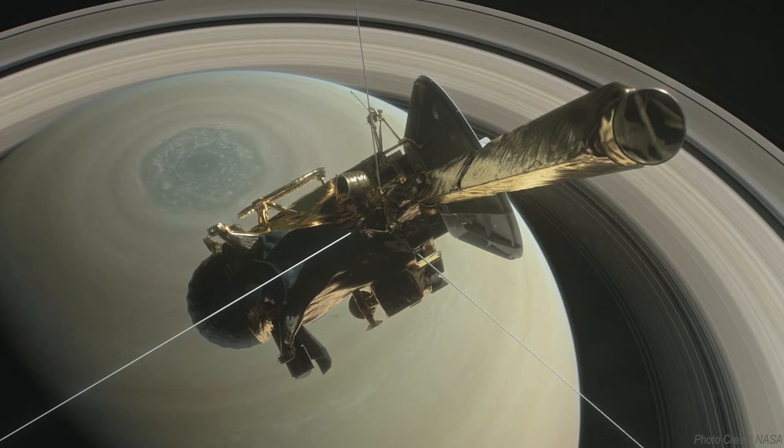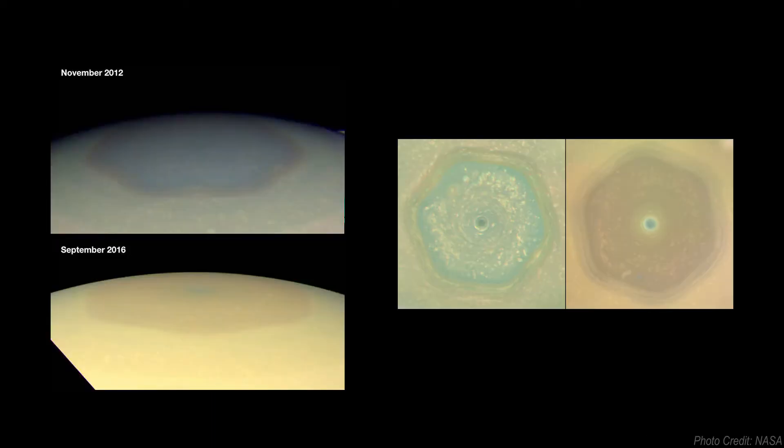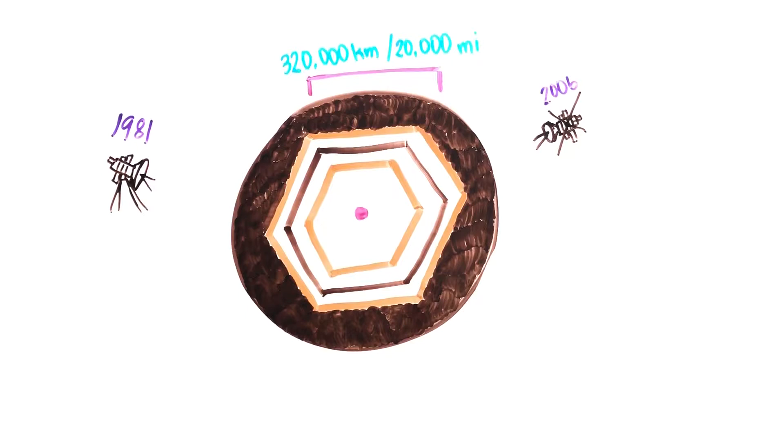During the Cassini mission, the hexagon changed its colors from mostly blue to more of a golden color. Scientists believe that this is because of the exposure to sunlight that creates a haze as the seasons change. We don't really know how long it's been there, but recent data from the Cassini spacecraft during its flyby mission shows that it reaches a hundred kilometers down into Saturn's atmosphere.